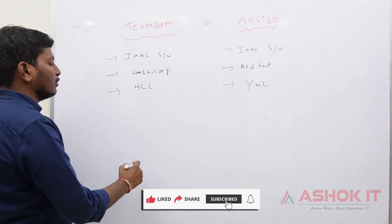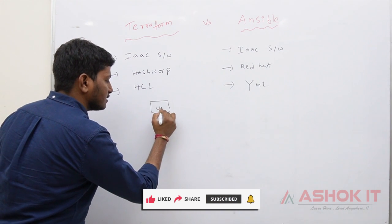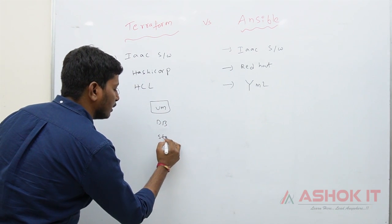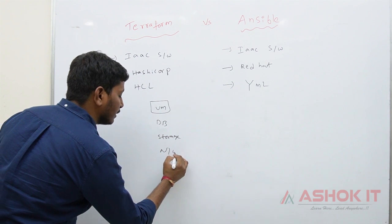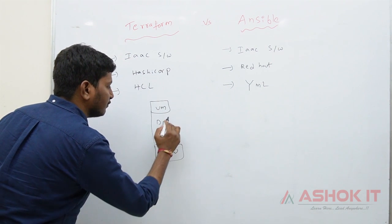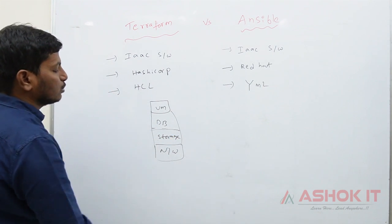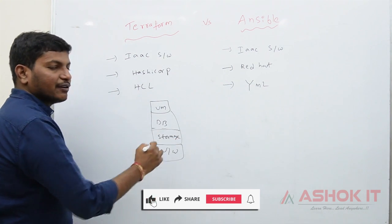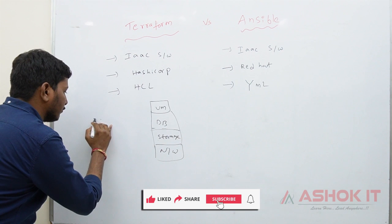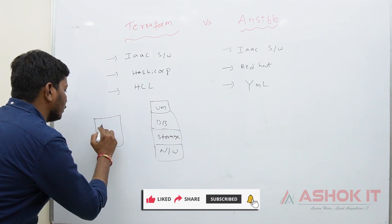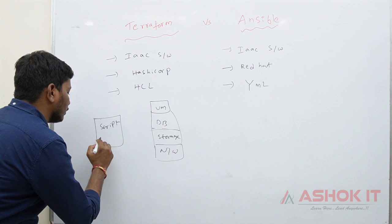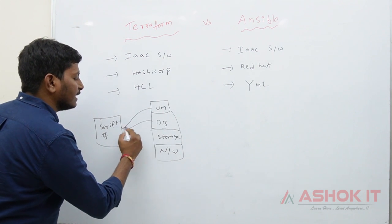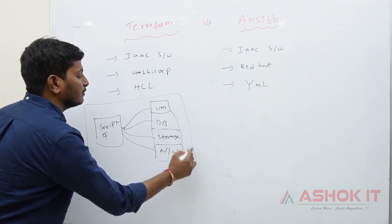Terraform software can be used to create virtual machines in the cloud, create databases in the cloud, create storage in the cloud, and create networks in the cloud. For a project we need a lot of infrastructure — virtual machines, storage, and networks. Instead of creating this infrastructure manually, we can use Terraform by writing a script stored with a .tf extension.